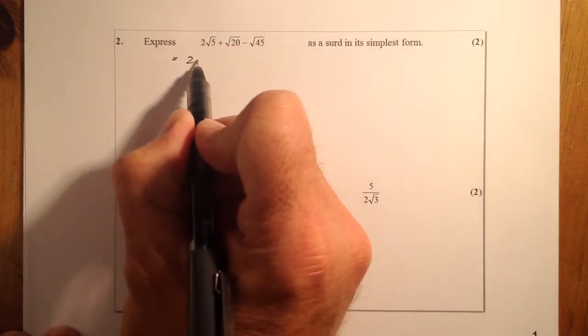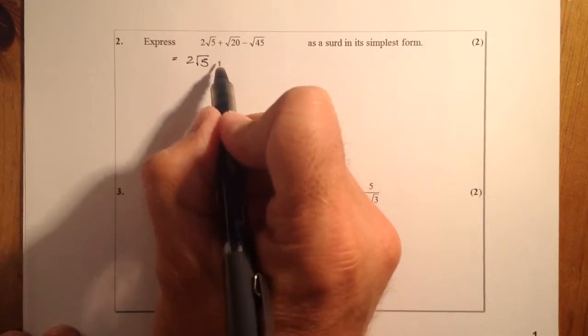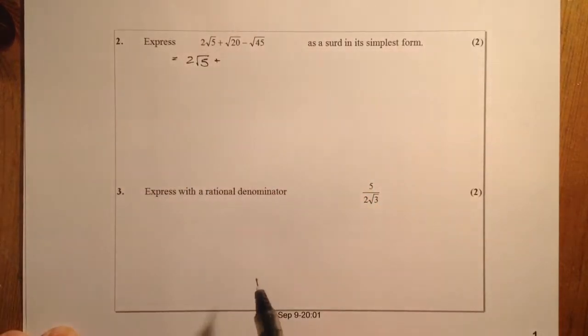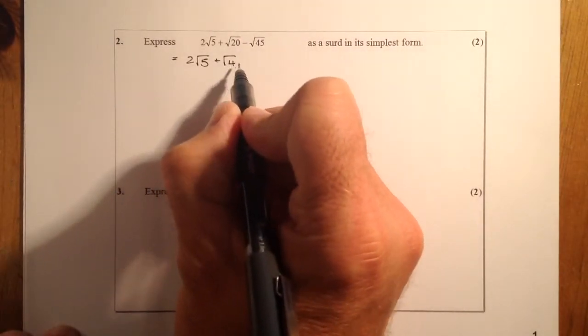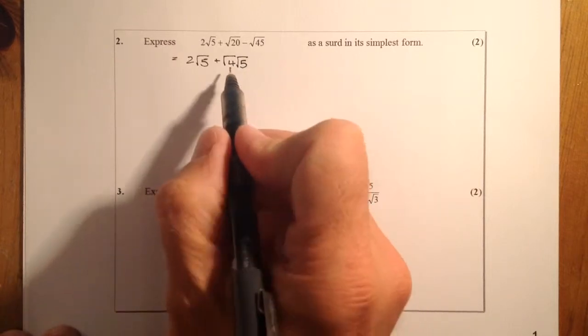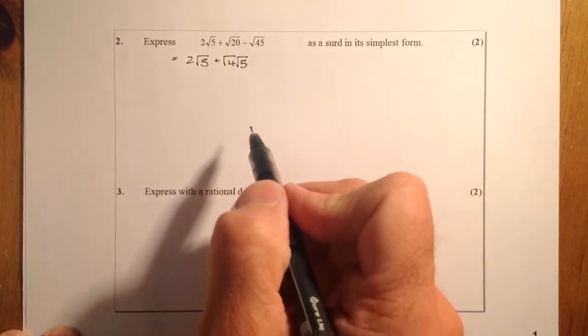Right, so at the start I've got 2 root 5. Two numbers that multiply to get 20, one of them is a square number. Well, I've got 4 and 5, so I can go for square root of 4, square root of 5. Because these two multiply together, give me root 20.